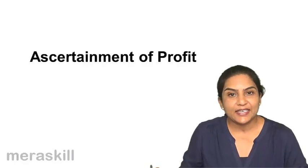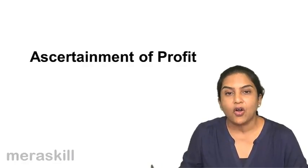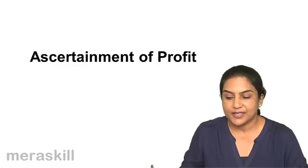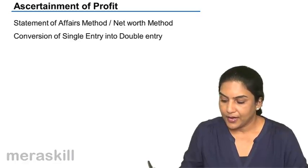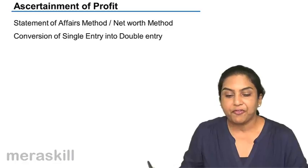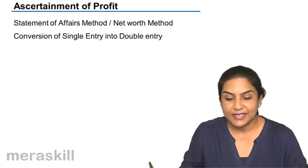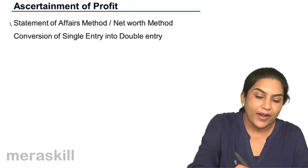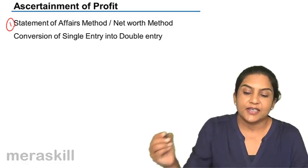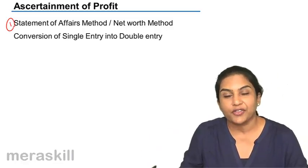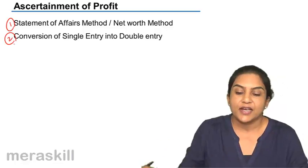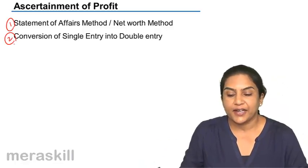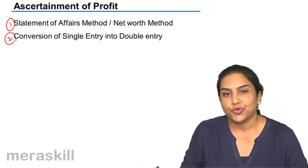Let us move on to ascertainment of profit under single entry. Profit under single entry may be ascertained under two methods. One is the statement of affairs method, or the net worth method. And two is conversion of single entry into double entry.